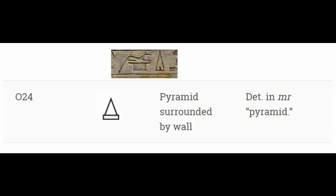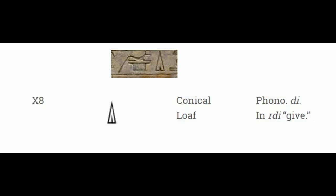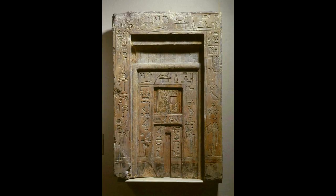This is a pyramid — Gardiner Sign List Classification O24. Straightforward. However, that is not the glyph on the false door. The glyph on the false door is a canonical loaf, Gardiner Sign List Classification X8. In this case it means 'give' and is part of an offering formula commonly found on funerary objects and false doors like this one. The offering formula reads: 'an offering is given by the king,' followed by the name of a deity and a list of offerings given. This one is to Anubis on his mountain. Anubis Mountain is an actual place, located in Abydos — a well-known sacred place for the Egyptians.